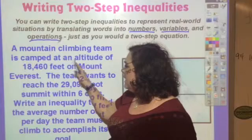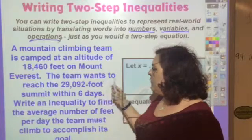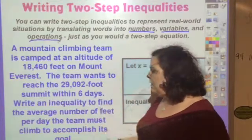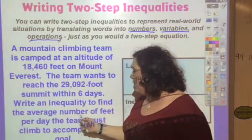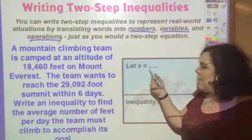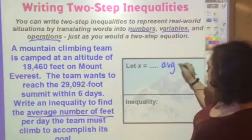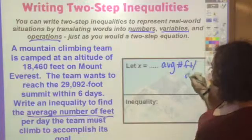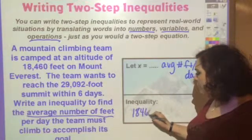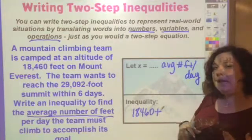A mountain climbing team is camped at an altitude of 18,460 feet on Mount Everest. The team wants to reach the 29,029-foot summit within six days. Write an inequality to find the average number of feet per day the team must climb to accomplish its goal. So x is the average number of feet per day. Starting at 18,460, we add to that an amount every day for six days.